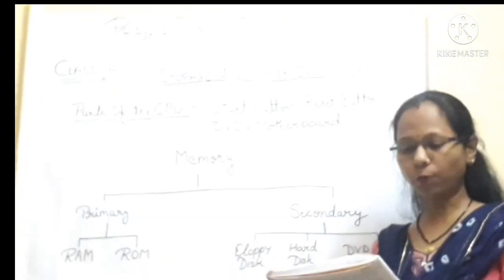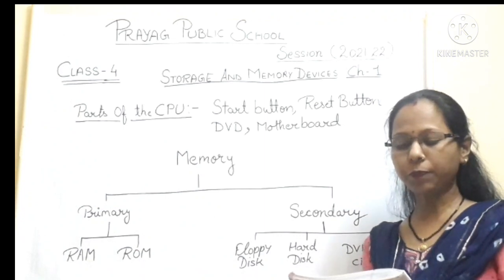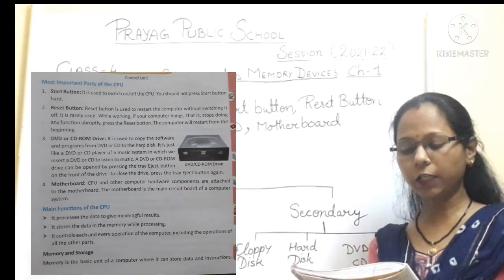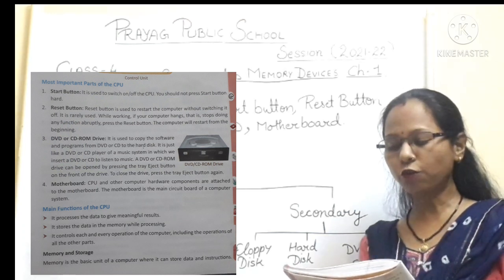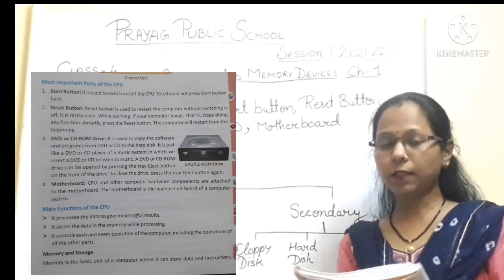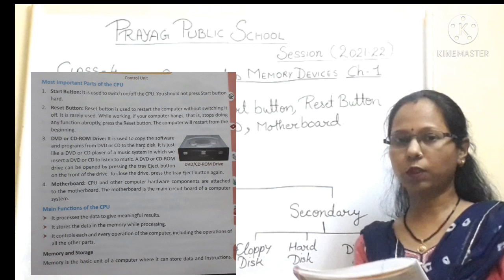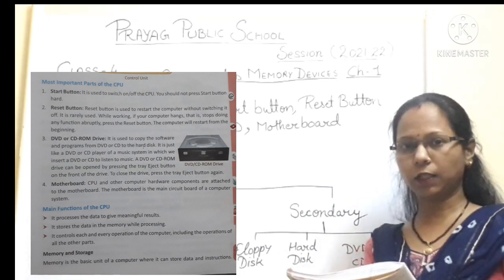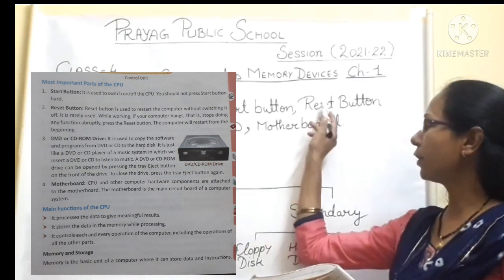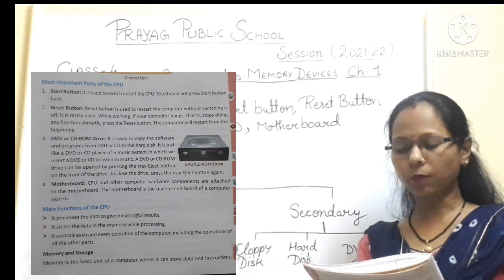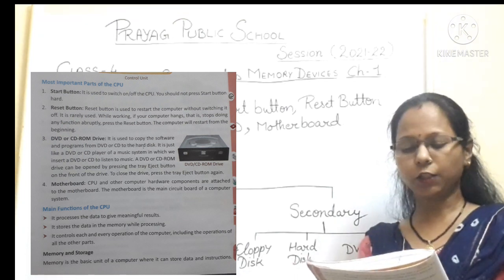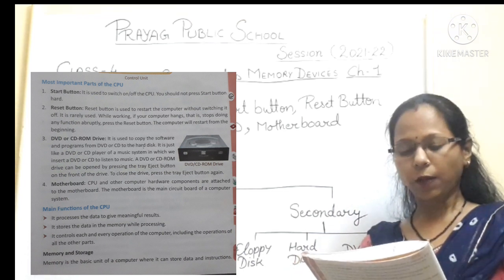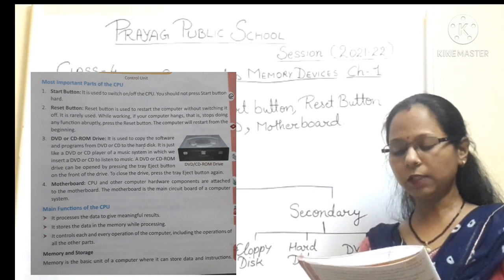The power button is used to switch the CPU on and off. You should not press the start button hard. The reset button is used to restart the computer without switching it off — it is rarely used. While working, if your computer hangs, i.e., stops doing any function, abruptly press the reset button and the computer will restart from the beginning.